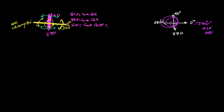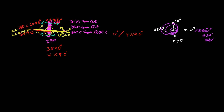Now, 0° is here; first 90°; then 180°, which I can write as 2×90°; 270° is 3×90°; and completing the circle gives 360°, which is 4×90°. Adding another 90° gives 5×90°, then 6×90°, then 7×90°, then 8×90°, then 9×90°, then 10×90°, then 11×90°, then 12×90°.